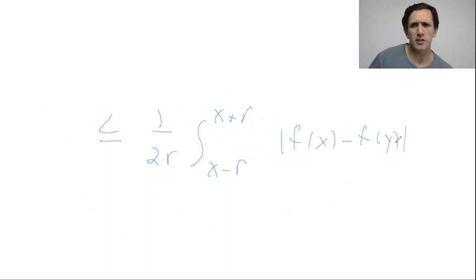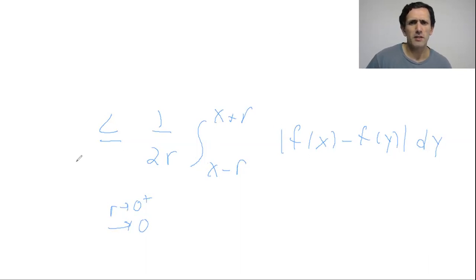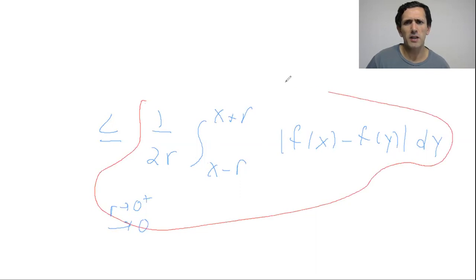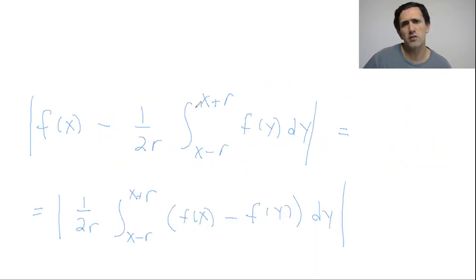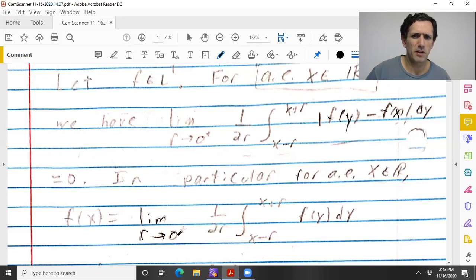In the Lebesgue differentiation theorem, it's |F(y) − F(x)|, but it doesn't matter. We're going to prove that this goes to zero as r goes to zero for almost every x. This going to zero for almost every x is definitely stronger than the original statement, so we're proving a pretty strong statement. What I really like about this proof is that it illustrates where maximal functions very naturally just pop up.